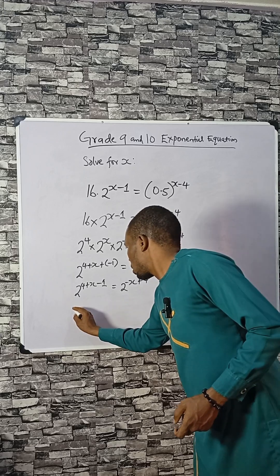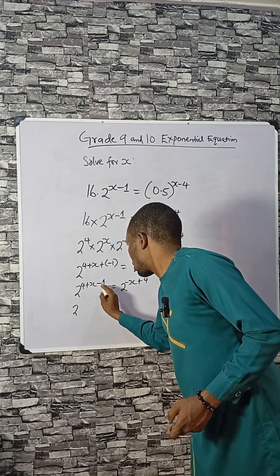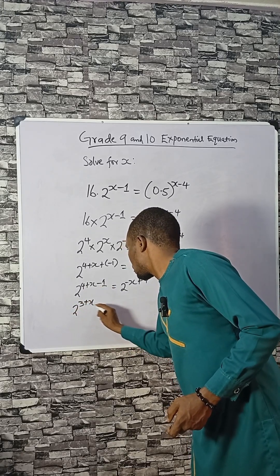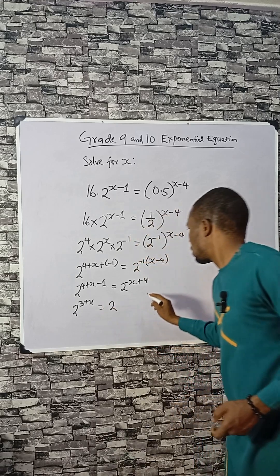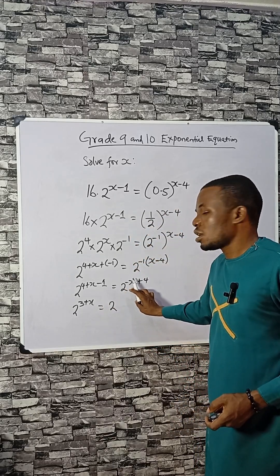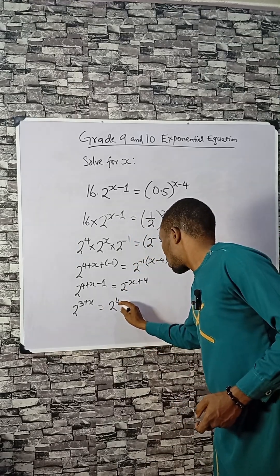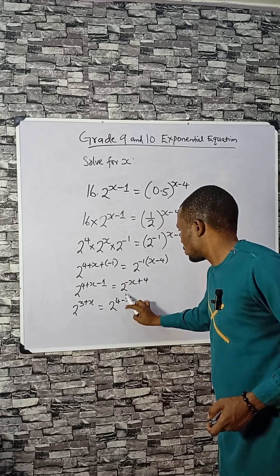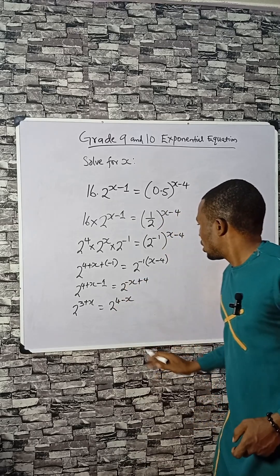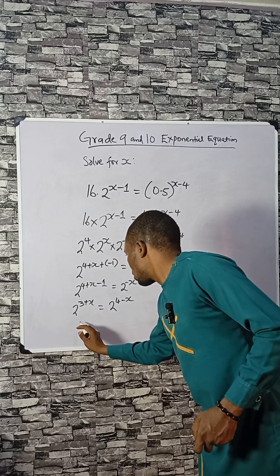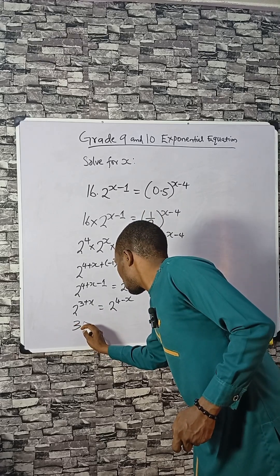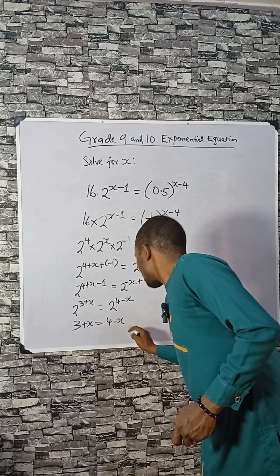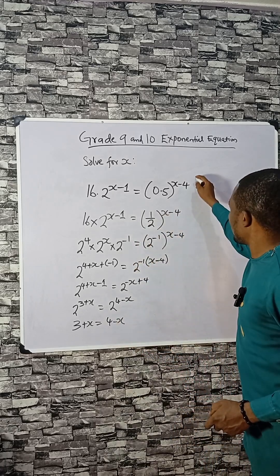So 4 minus 1 is 3, giving us 3 plus x on one side. On the other side we have 4 minus x. Now they have the same base, so the powers can be equated: 3 plus x equals 4 minus x.